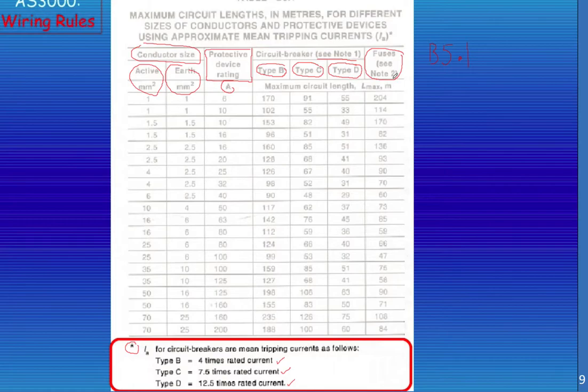So this table tells us the maximum length we can run in meters for our active and for our earth, depending on the current rating of the circuit breaker and the distance that we need to actually travel. So when they say circuit length, they actually mean the length of the cable.